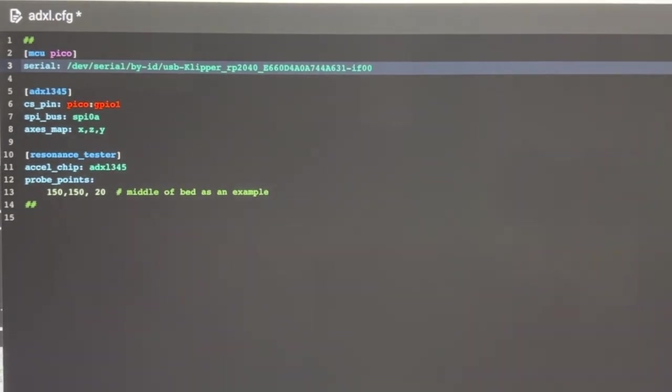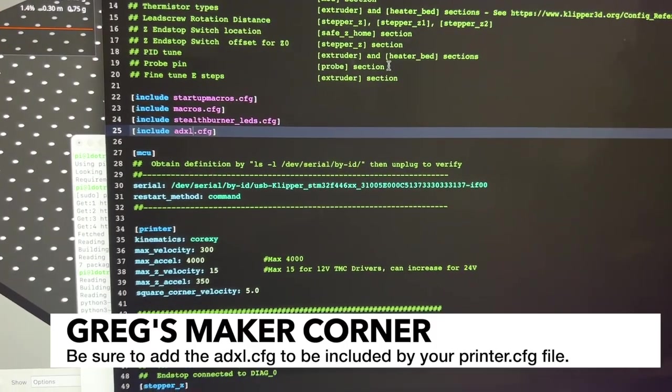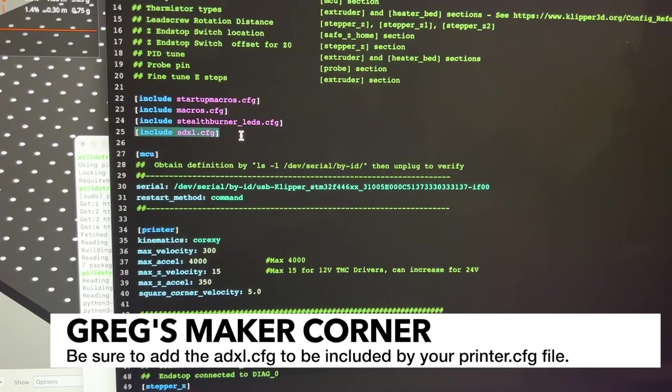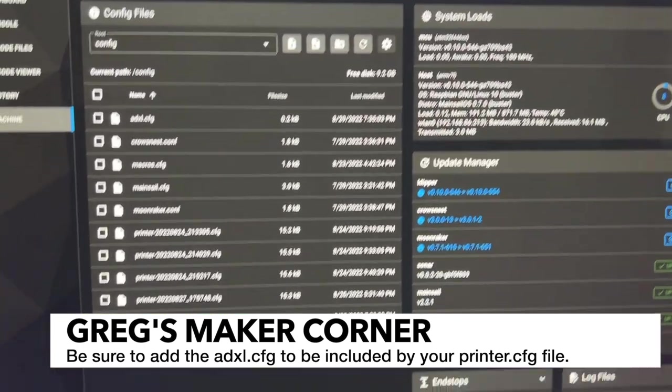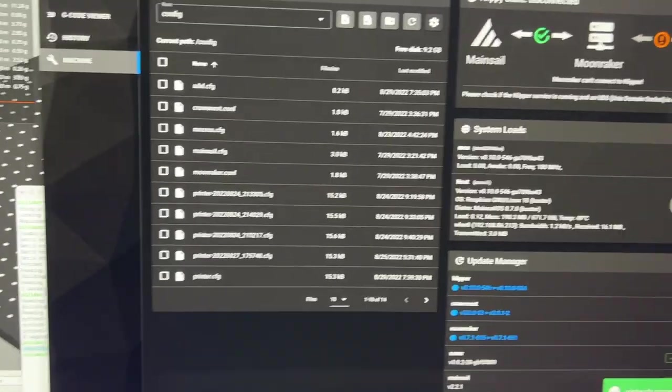So it should look like that. Now I can do save and restart. The important stuff that you don't want to forget is adding this include ADXL CFG. And then you want to hit save and restart after you add that. And then if everything worked, you shouldn't get an error.